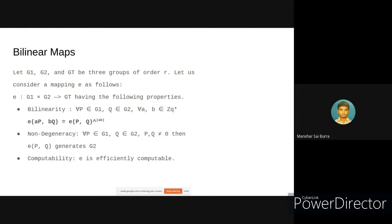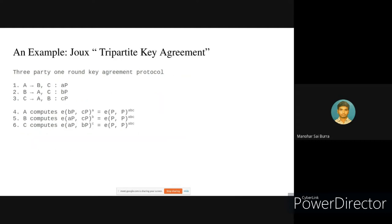If groups G1 and G2 are the same, then the bilinear pairing is called a symmetric bilinear map. For practical implementations of bilinear maps, there are libraries such as the PBC library and the MIRACL library. We will be discussing the PBC library. Before that, I'll introduce an example of a tripartite key agreement proposed by Joux, which is based on this bilinear map.